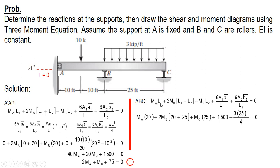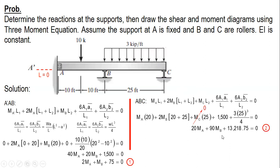Let's substitute: M-A times L1, where L1 is the length of A to B, and L2 is the length of B to C. So M-A times 20 plus 2 times M-B times (20 plus 25), and then the left side load value, plus the right side: W times L-cubed over 4. Since M-C equals zero — it's a roller support — this gives us equation number 2.